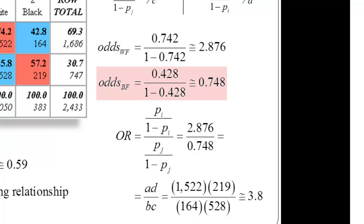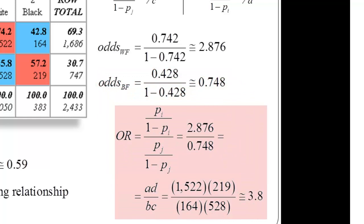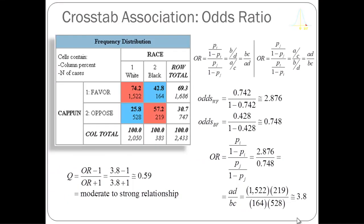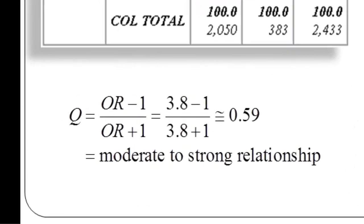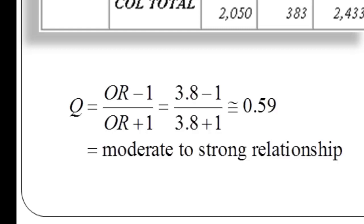To compare these two odds, we calculate the odds ratio just as we did for Titanic: the odds of whites favoring divided by the odds of blacks favoring capital punishment — 2.876 divided by 0.748 — gives an odds ratio of 3.8. White respondents are 3.8 times more likely to favor capital punishment than black respondents. There's also an interesting relationship between the odds ratio and Yule's Q: Yule's Q equals the odds ratio minus 1 divided by the odds ratio plus 1, which gives approximately 0.59 — consistent with our earlier calculation.